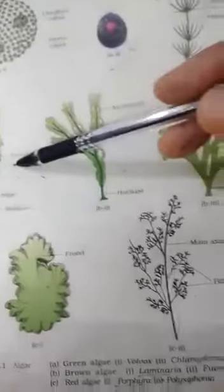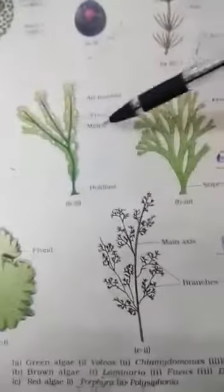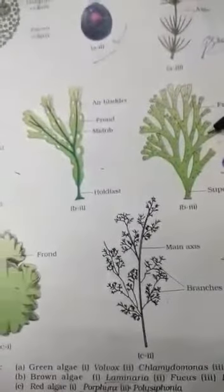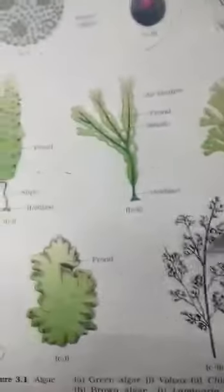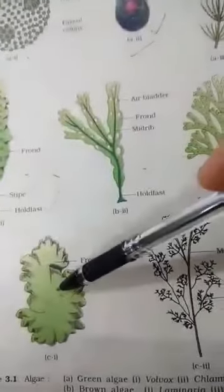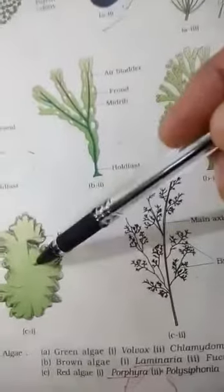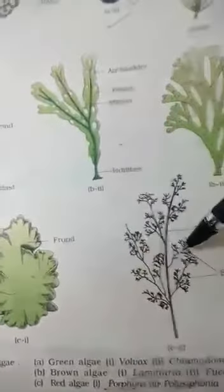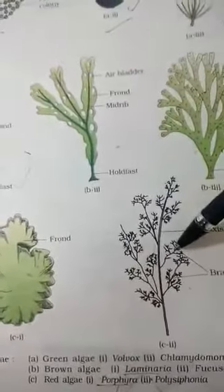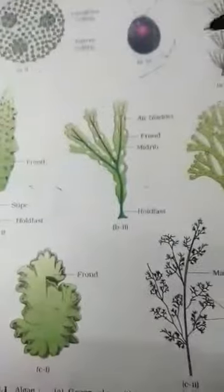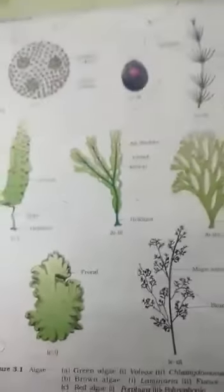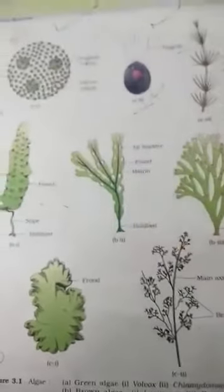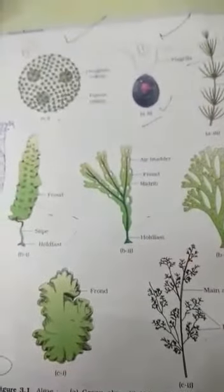The brown algae shown here are Laminaria, Fucus, and Dictyota. Then Porphyra and Polysiphonia are red algae. So we can see that algae are of different types — red, green, and brown — according to the pigments present in them.